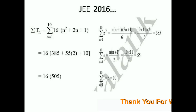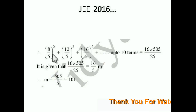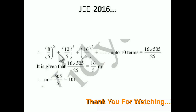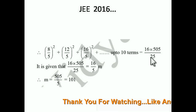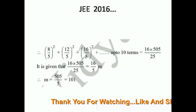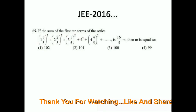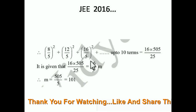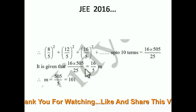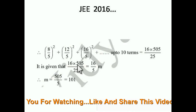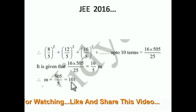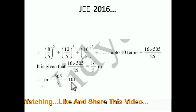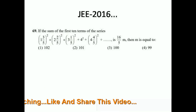What was given is that the sum of the series equals 16 × 505 / 25, because we had factored out (1/5)² = 1/25 from all terms. This equals 16/5 · m. Cancelling 16 on both sides and simplifying: 505/5 = 101, so m = 101. A good question but straightforward once you apply the formula. This was asked in JEE 2016.